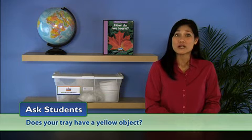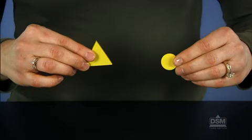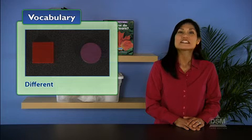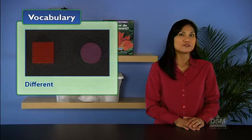Next, engage the class in an investigation into the property of color. Review colors if necessary, and ask students: does your tray have a yellow object? Students should identify either the yellow chip or the yellow block. Have students look around the classroom to identify other objects that have the color yellow as a property. Make sure to use the words alike, same, and like for colors that match. To help students understand the term different, point to an object that is not yellow and explain that the colors of the yellow and non-yellow objects are different because the colors are not alike. Add these color words to the properties chart.